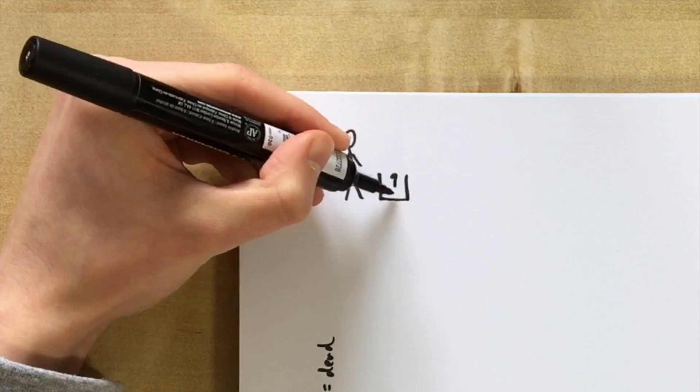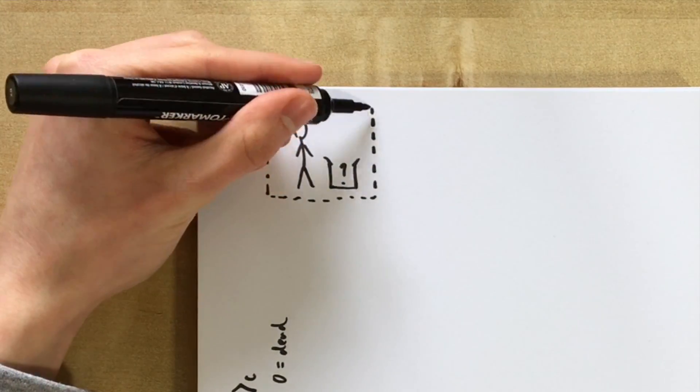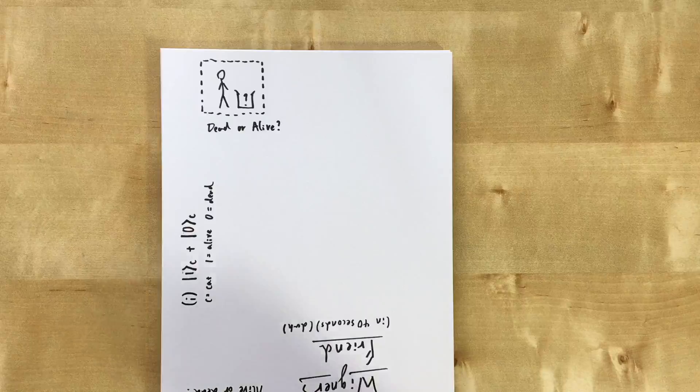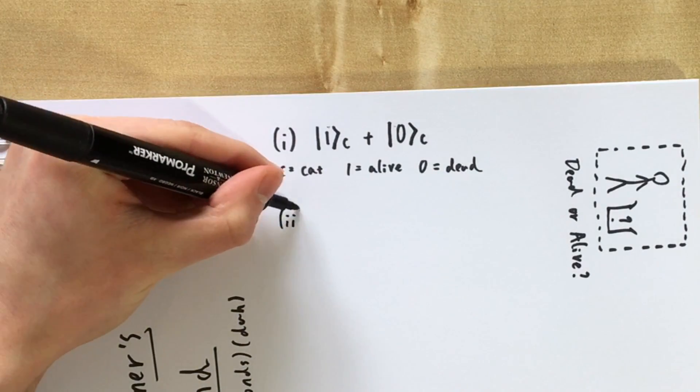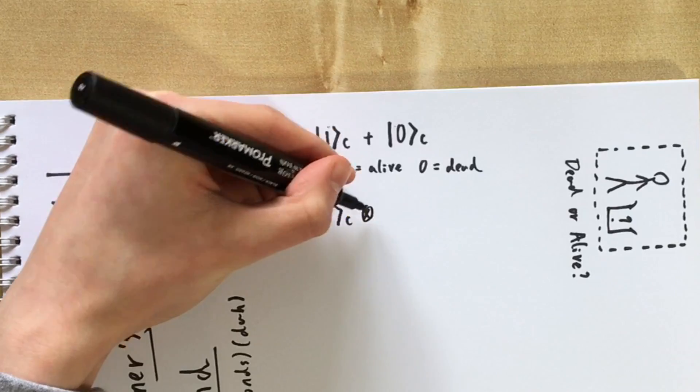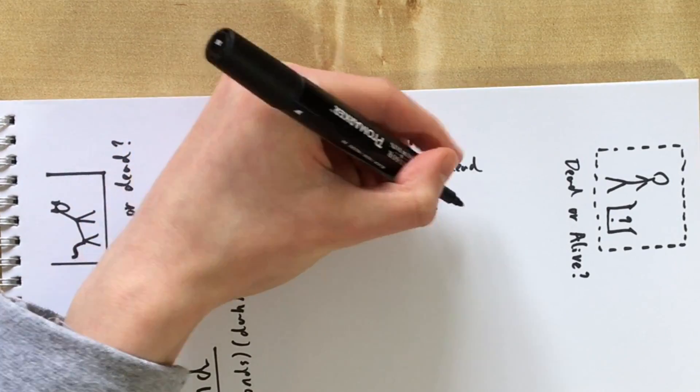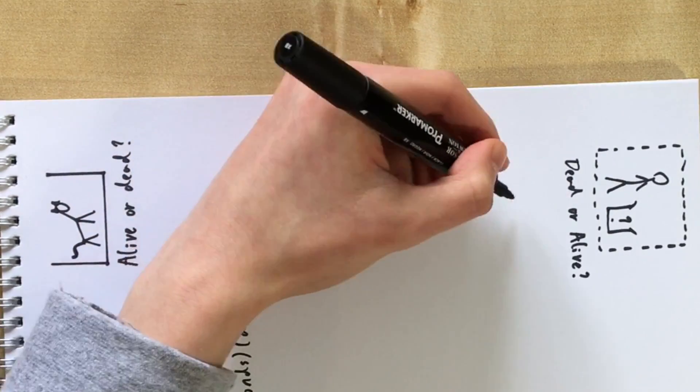Wigner's Friend looks inside the box, however by doing this collapses the superposition inside the box and starts one involving him and the cat. We now have a completely different equation which looks very similar to the first one, but with the slight difference that it now includes the person who's looked inside the box.